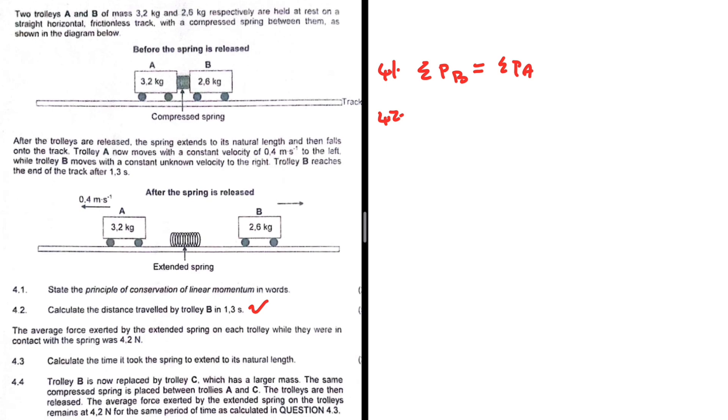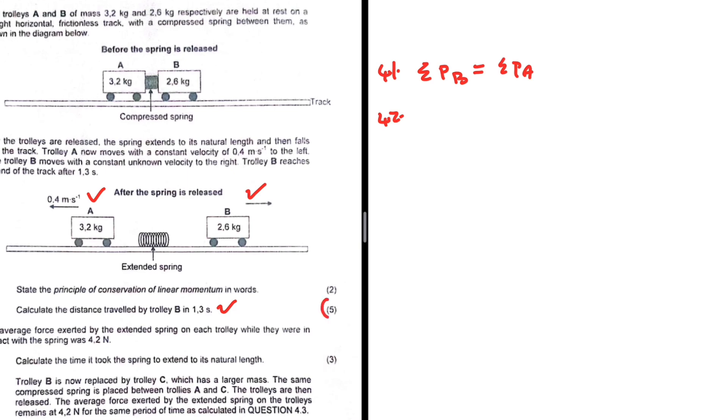And then here it's after the spring is released, right, as you can see. After the spring is released, trolley A moves with a velocity of 0.4 meters per second to the left, while trolley B moves with an unknown velocity. That is the information we have.